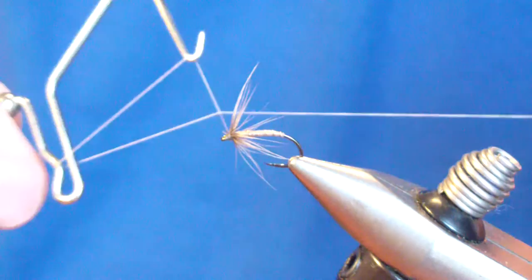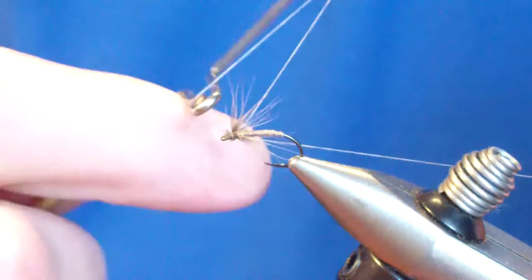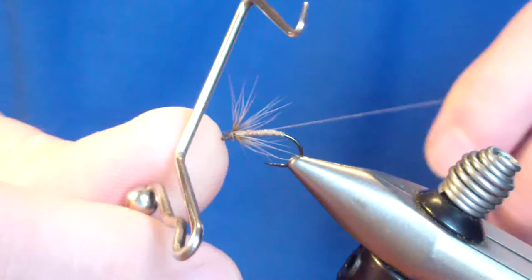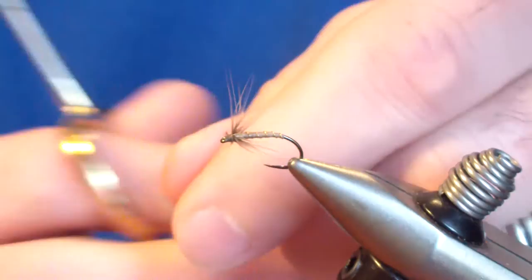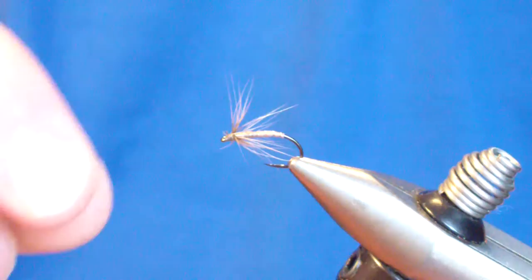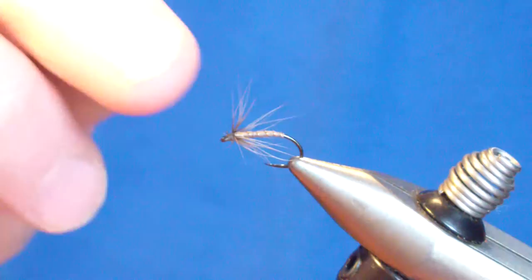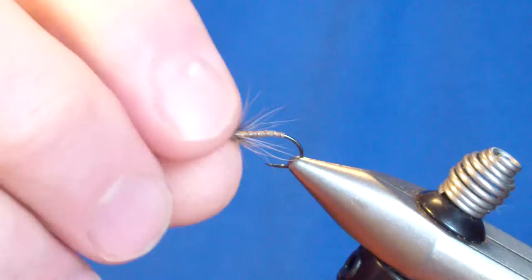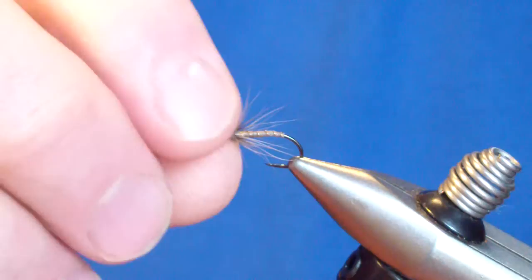And then a quick three turn wet finish. And there it is, copper tan. Grease your tippet, leave this fly in the film. March brown hatch is its perfect match. Does extremely well for me when they're looking for wets. I hope it adds to your box as it has mine. Good luck this spring. See you in the water.